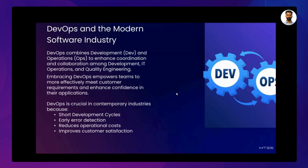Starting with short development cycles: DevOps allows developers to release their product much quicker because they no longer have to wait for approval from other teams. Instead, they can release new versions as soon as they are ready for testing, which means that bugs can be caught much earlier in the process and fixed before they become significant issues.